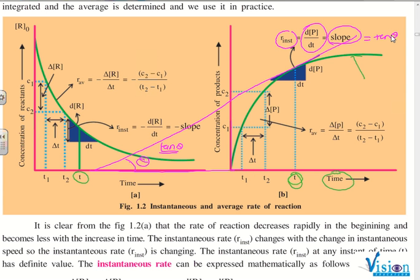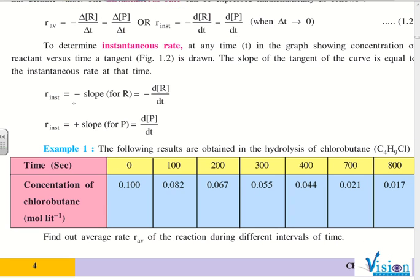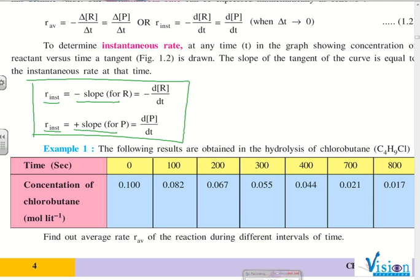Is this understood? So if we conclude from our textbook, our textbook says r_instantaneous equals to negative slope, that is minus d[R] by dt for reactant. And we have a positive slope for product, that is d[P] by dt. This is understood. Okay, highlight these things. This is it.